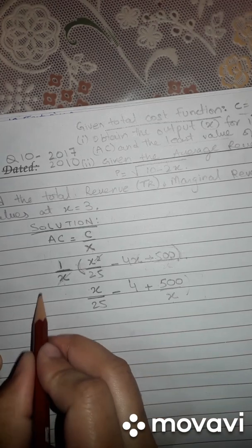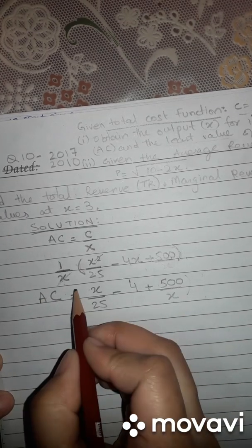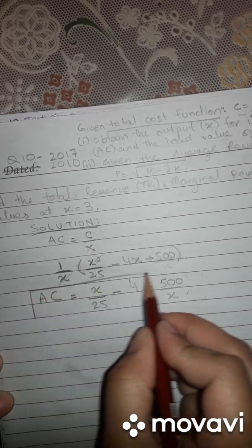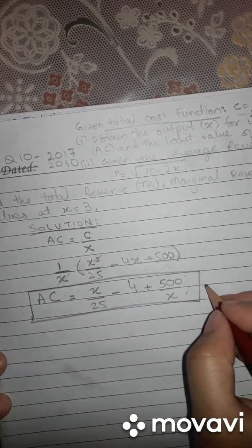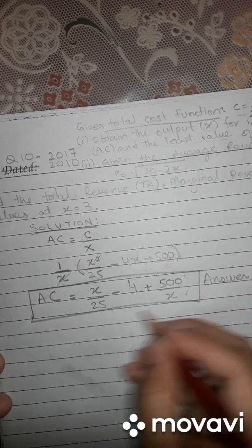This is the AC. AC is equal to this. Now mark this in a box so examiner can look up for the answer. This is your AC.